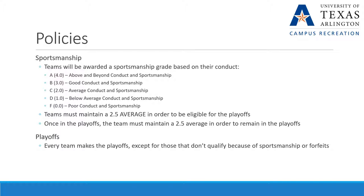Our sportsmanship system is as follows. Teams will be awarded a sportsmanship grade for each game based on their conduct. A 4.0 or A is above and beyond; a B or 3 is good conduct; a 2 is average; a 1 is below average; and an F or 0 is poor conduct and sportsmanship. Teams must maintain a 2.5 average in order to be eligible for playoffs, and once in the playoffs, a team must maintain that 2.5 average to remain in the playoffs.